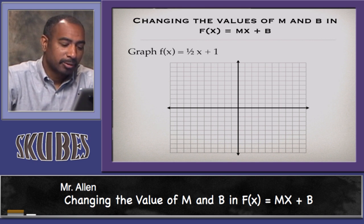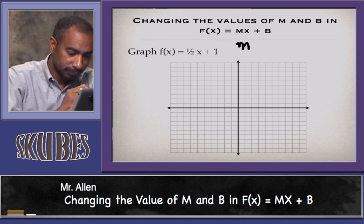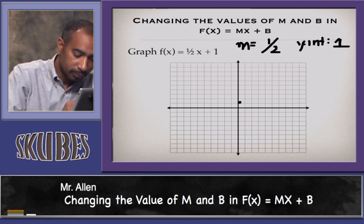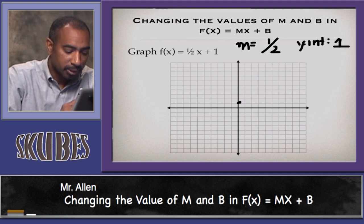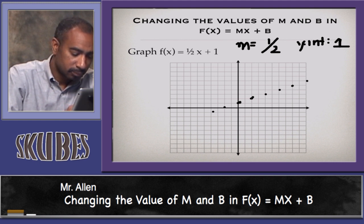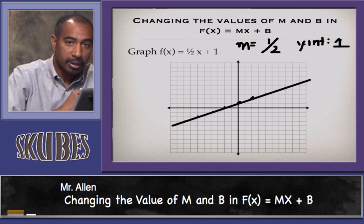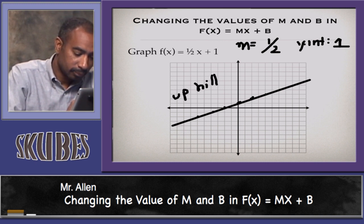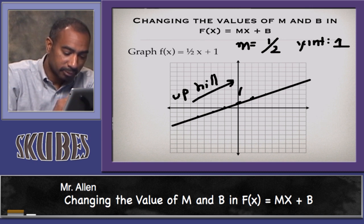Consider the function f(x) = ½x + 1. The slope is 1 half and the y-intercept is 1, so the starting point is at 1. Move to the right 2 and go up 1, then over 2, up 1, and so on. Or go to the left 2 and down 1. Notice that compared to when the slope was 2, this line is on a gradual, mellower incline — still going uphill — and the y-intercept is still (0, 1).